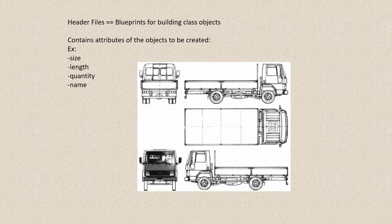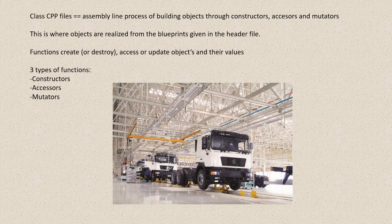In the header file you'll define the attributes of the objects through integers, strings, floats, arrays, etc., and have some kind of declaration for functions that you will then implement in a CPP file. In your class CPP file, think of it as a series of functions that are like an assembly line for building the objects, accessing them and mutating them through setting functions.